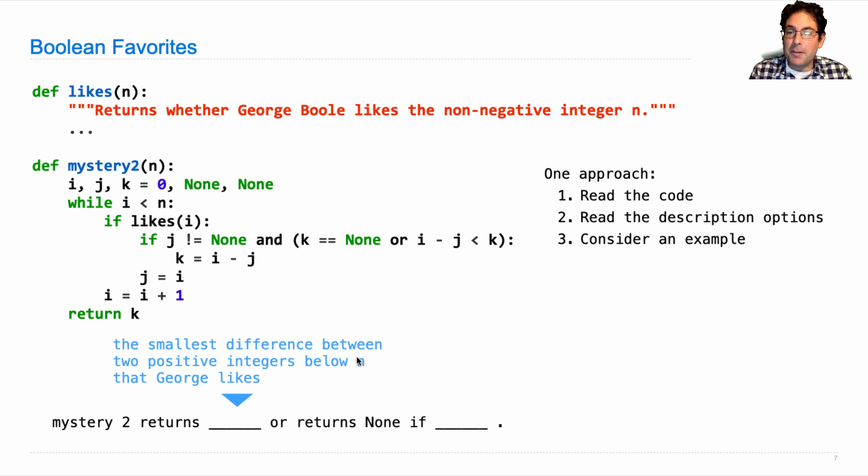Mystery two returns the smallest difference between two positive integers below n that George likes. Oh, but we forgot about this part: or returns none.